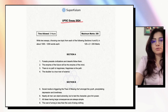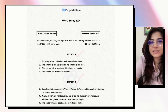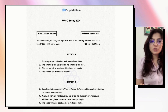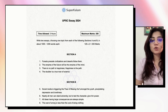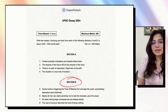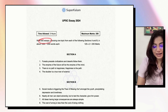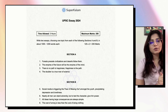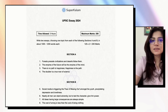Let's get started with the UPSC Essay 2024 question paper. As you all know, there are two sections — Section A and Section B. The instructions are quite clear: write two essays, choosing one topic from each of the following sections. That means you cannot skip Section A or Section B. You cannot choose two topics from one section. You have to write two essays in three hours, with a word limit of 1000 to 1200 words each.